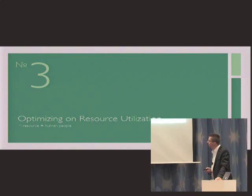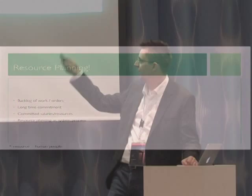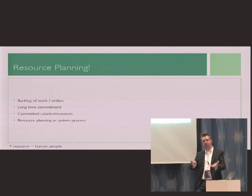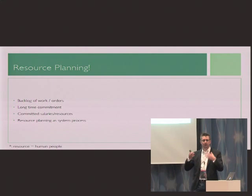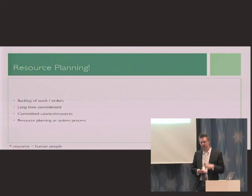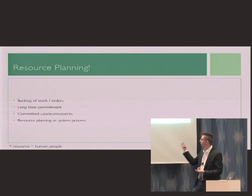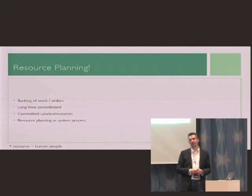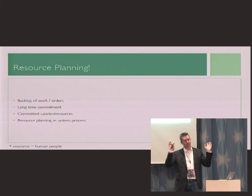We're optimizing on resource utilization. Resource means human at this point. We think we need to do some resource planning. So what we do, we take our backlog of orders, and we want a long-time commitment. You have the agency with 20 people, and you say, I want to know, will there be enough work in May, June, September? Let's have a large backlog of orders from potential clients, and we start somewhere in three or four months because you have committed salaries.